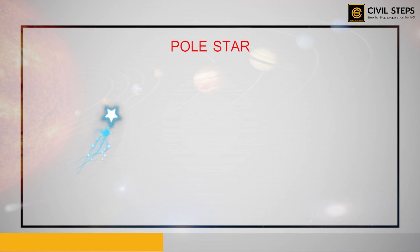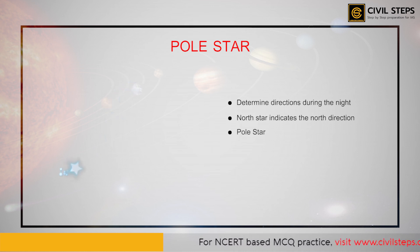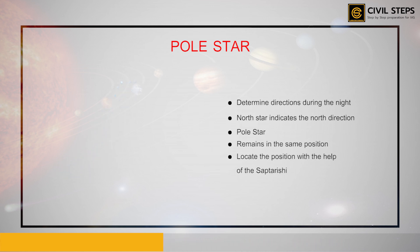What do we mean by a pole star? During ancient times, people used to determine directions at night with the help of stars. The north star indicates the north direction and is called the pole star. It always remains in the same position in the sky, and we can even locate the position of the pole star with the help of Sapta Rishi.